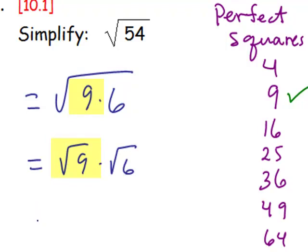The square root of 9 has a whole number value, 3, but the square root of 6 does not. So there's our result, 3 radical 6.